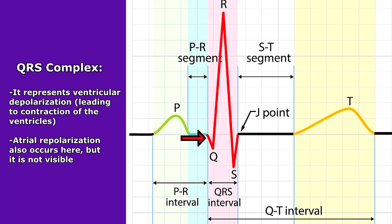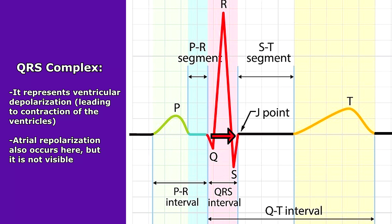Next is the QRS interval, also known as the QRS complex, and this represents ventricular depolarization, leading to the contraction of the ventricles. Also found within it, though you can't see it, is atrial repolarization — the atria are relaxing — but the ventricles are so large that the atrial relaxation is overshadowed. So you're really only seeing ventricular depolarization here.